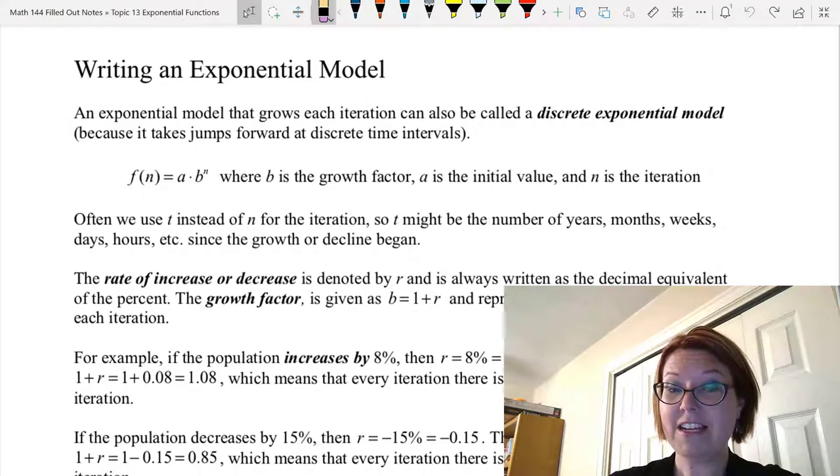We can use t instead of n for the iteration, so t might be the number of years, months, weeks, days, hours, etc., since the growth or decline began.